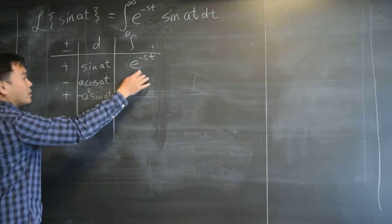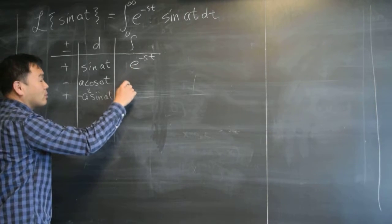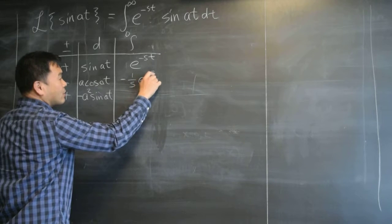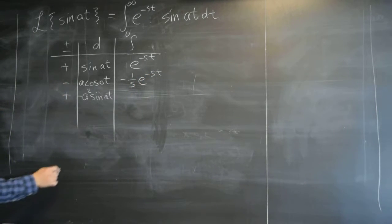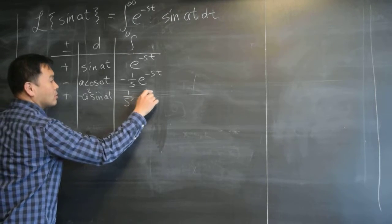Now let's integrate. Again, on this side, you have to think of s as some constant. So if you integrate, negative one over s e to the negative st. Integrating again gives you one over s squared e to the negative st.